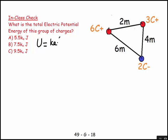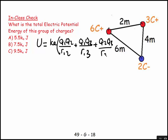It's going to be ke Q1 Q2 over r12 plus Q1 Q3 over r13 plus Q2 Q3 over r23. As long as the numbers go with the numbers, the numbers on top go with the numbers on the bottom, everything's okay.